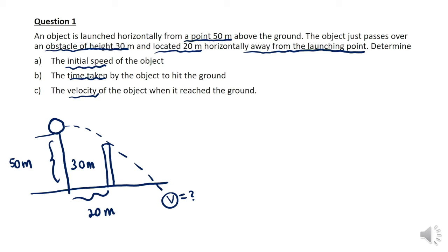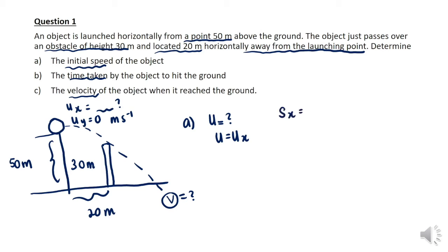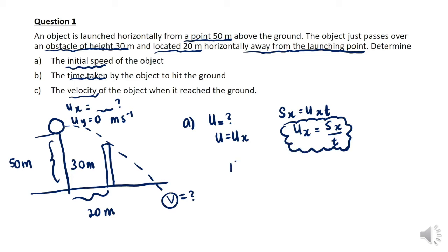It asks us to find the initial speed. For horizontal projectile, uy equals zero, so the initial speed equals the speed at the x-component: u equals ux. Based on the kinematic equation, we use sx equals ux times t, rearranged to ux equals sx over t. First we need to find the time to reach the obstacle.